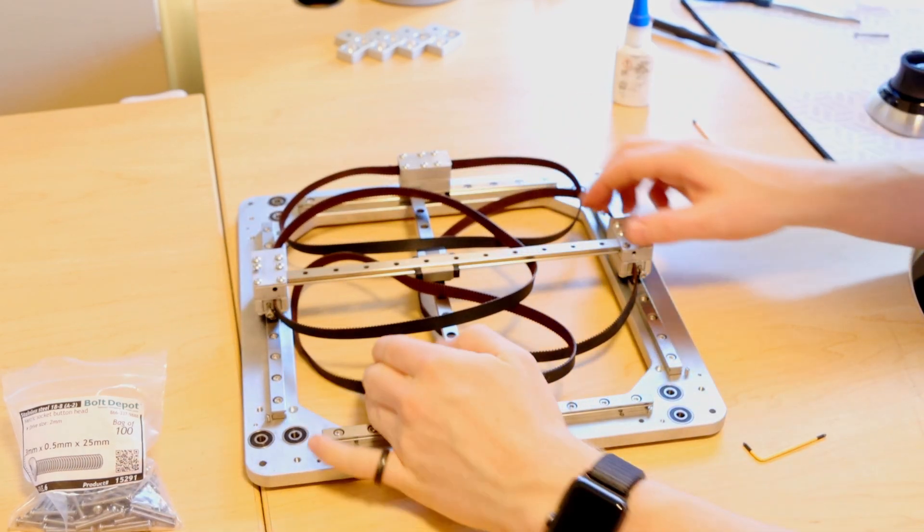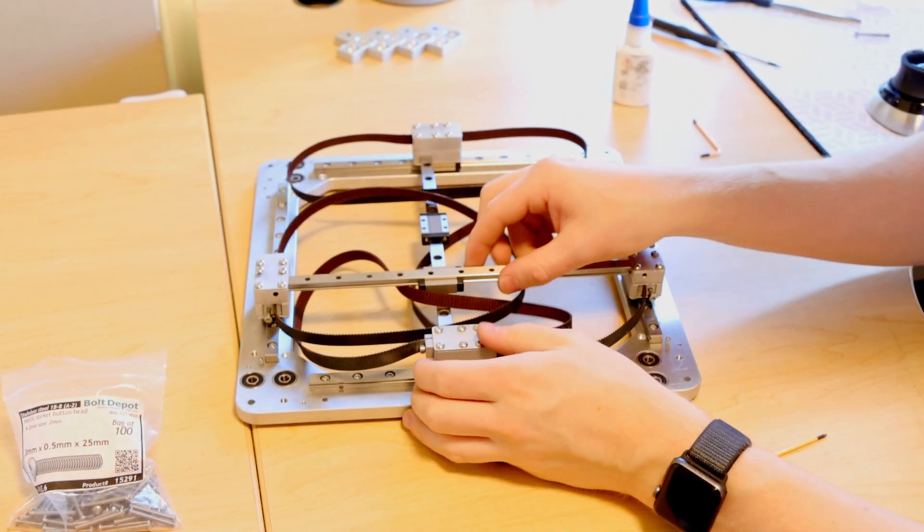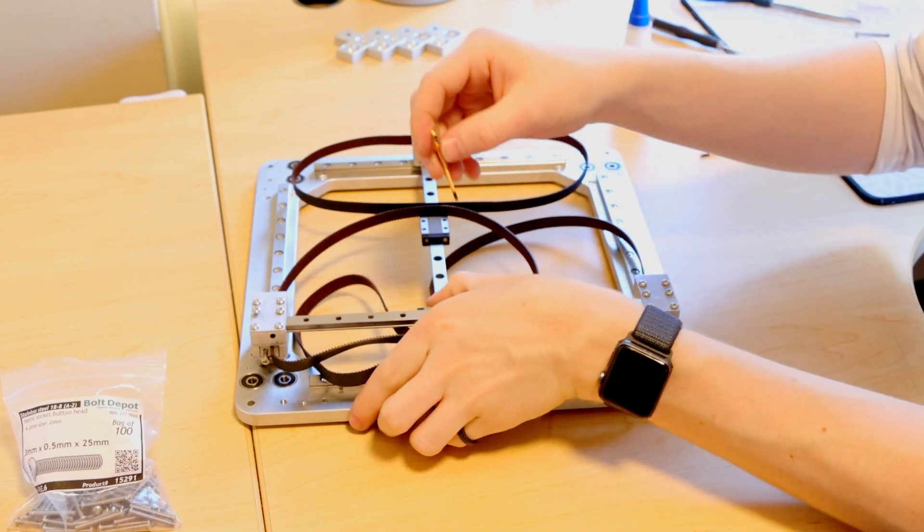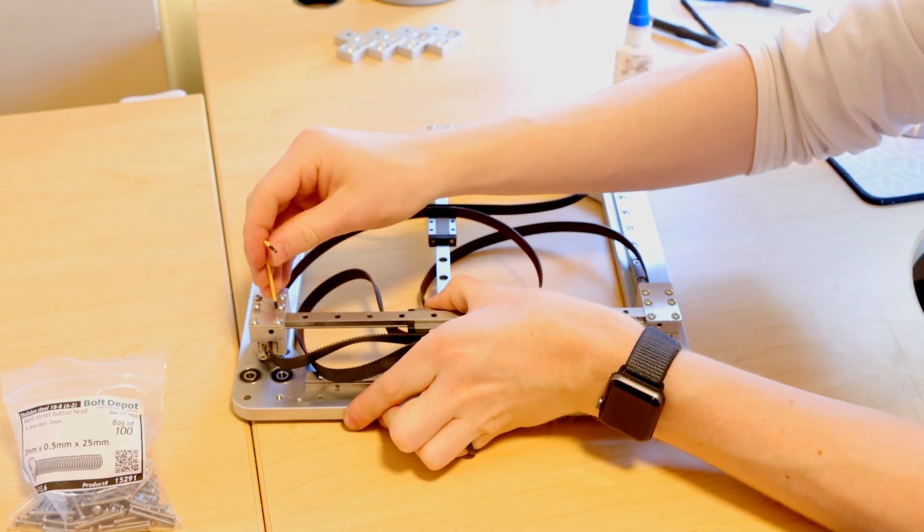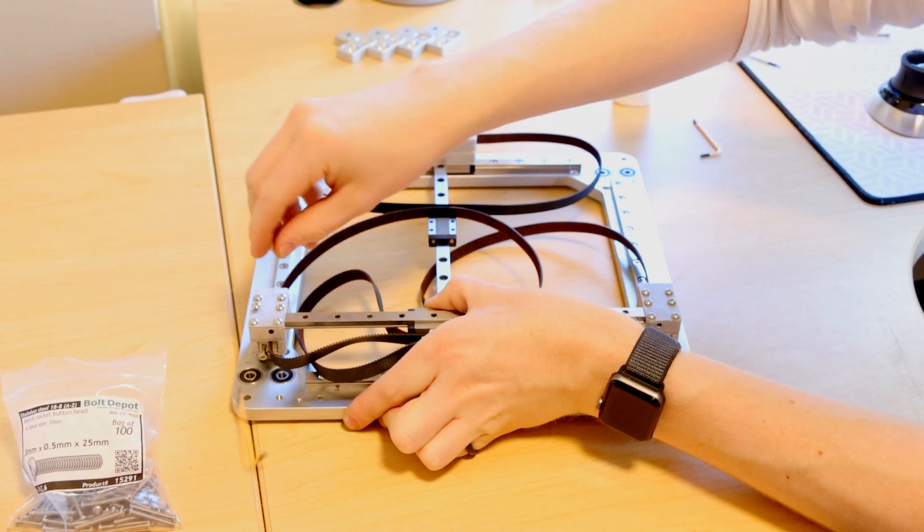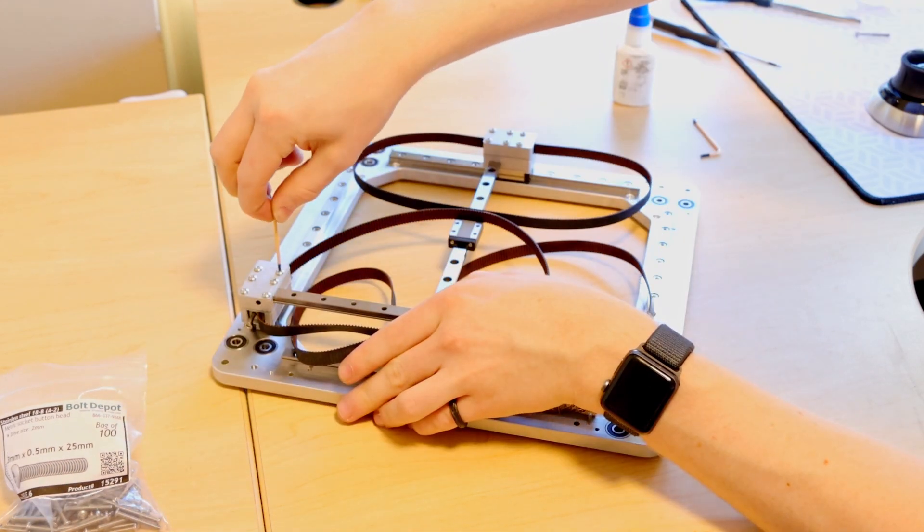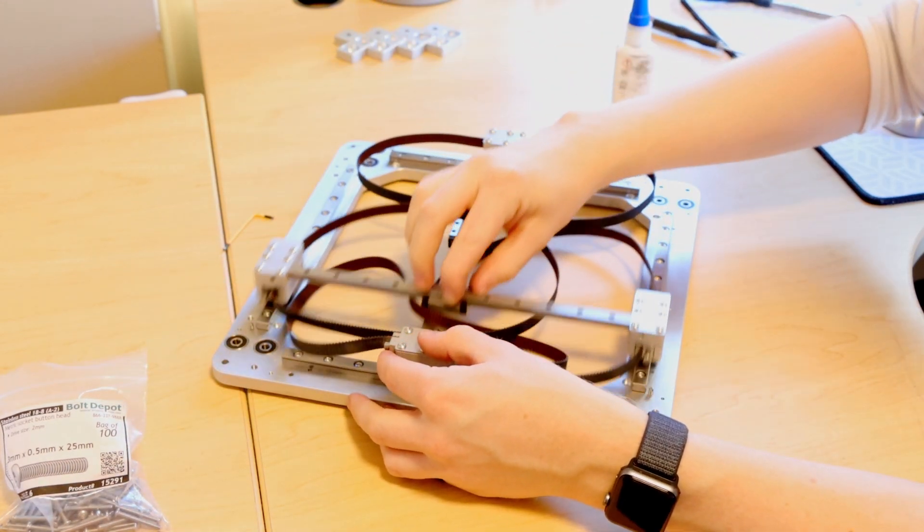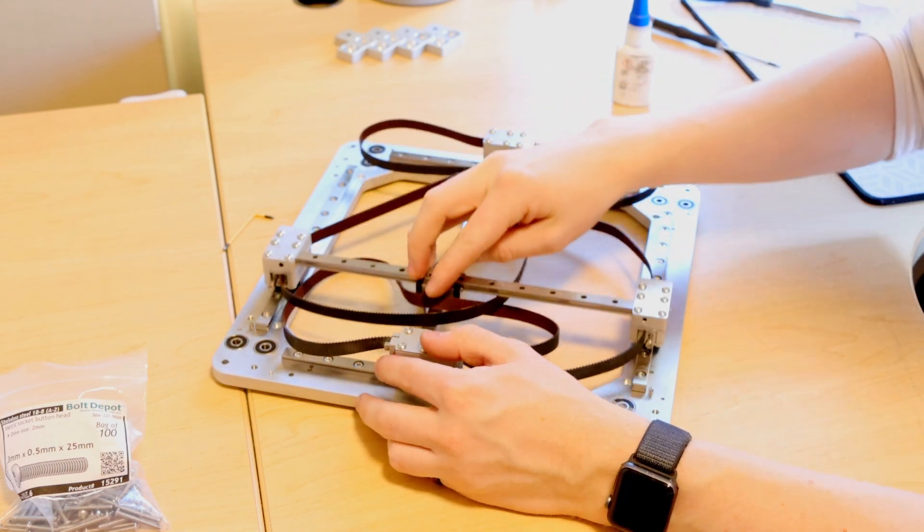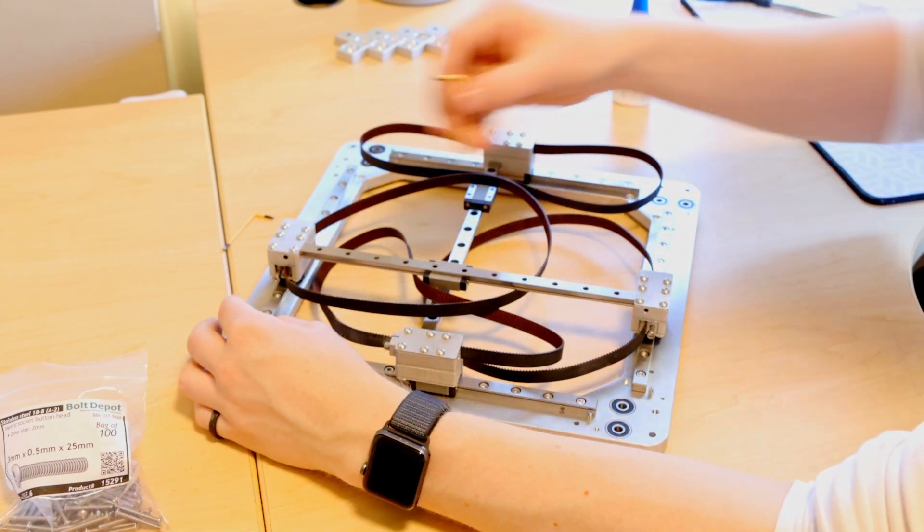And then like before we're going to push it up against the end stop and then with it pressed up against we can go in and tighten. Here we go. And now we'll go and start tightening the rails just like last time.